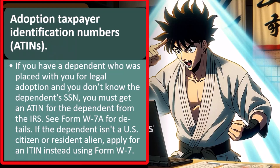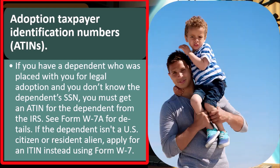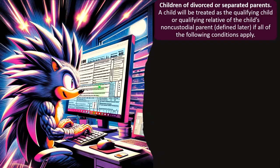If they're adopted, you need the number — a social security number, or at least some kind of identification number. If they're adopted, that means you might have an Adoption Taxpayer Identification Number, an ATIN (A-T-I-N). So if you have a dependent who was placed with you for legal adoption and you don't know the dependent's SSN, you must get an ATIN for the dependent from the IRS. You can see Form W-7A for details. If the dependent isn't a U.S. citizen or resident alien, apply for an ITIN instead using Form W-7.